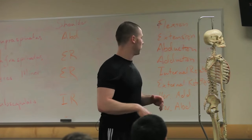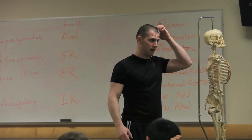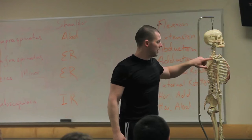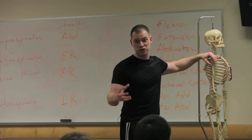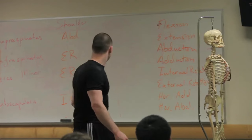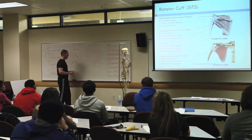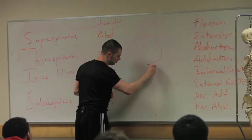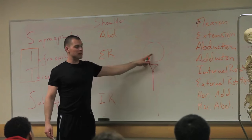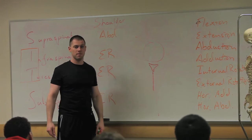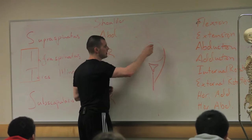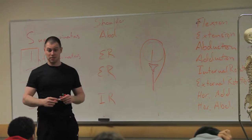The glenoid fossa - the shoulder socket - is a little unfair. Does that look like something the humeral head is totally buried in? It would be a better analogy to call it a golf ball and tee joint - that's about how much support the humeral head has. So who keeps the humeral head on the glenoid fossa? The rotator cuff comes along and puts one muscle in front, a couple around the back, and one on top to hold everything in.